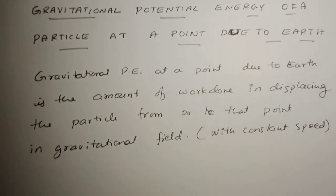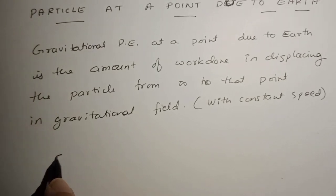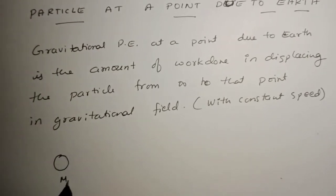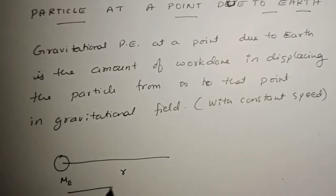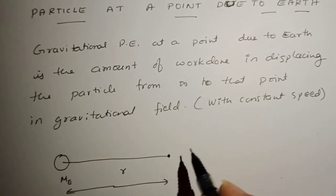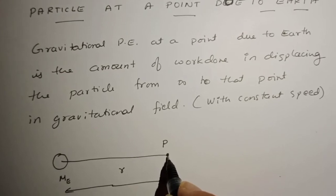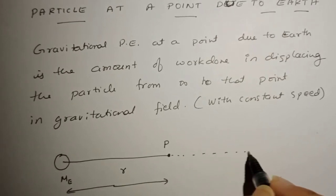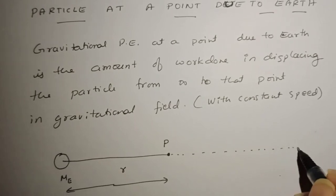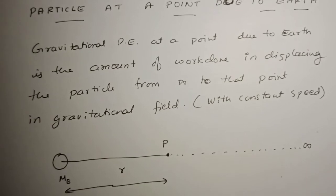Let us analyze the situation. This is earth, and the mass of earth is M_e. At a radial distance r from earth, we consider a point P. I'm interested in finding the gravitational potential energy at this point P. To calculate it, I have to calculate the amount of work done in displacing the particle from infinity to that point.